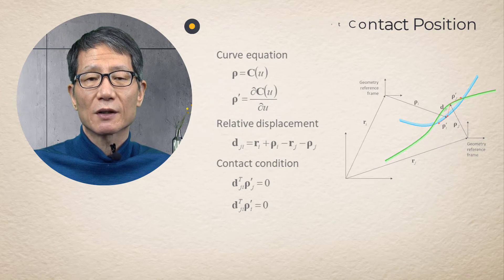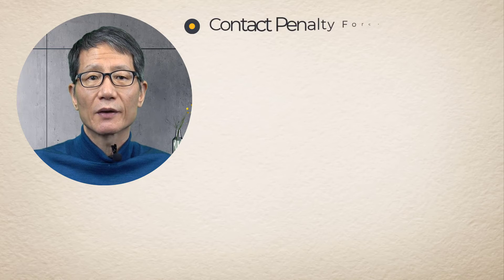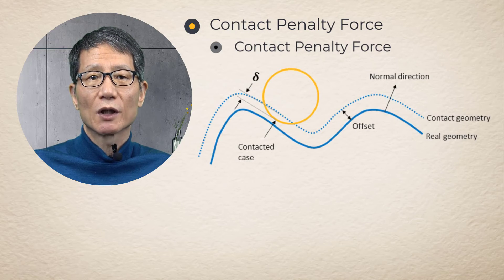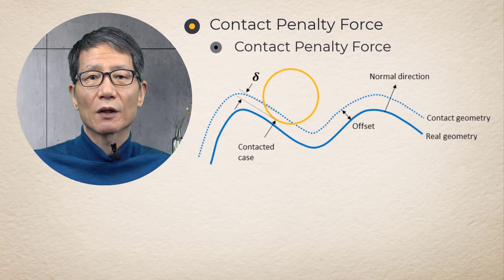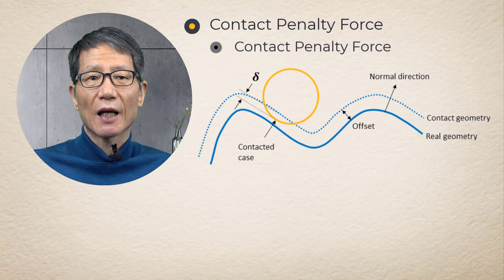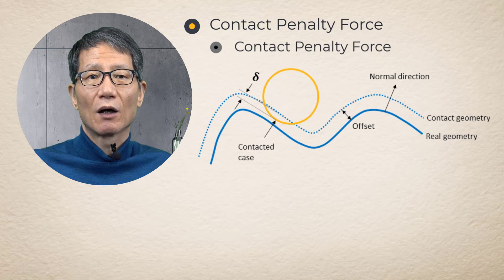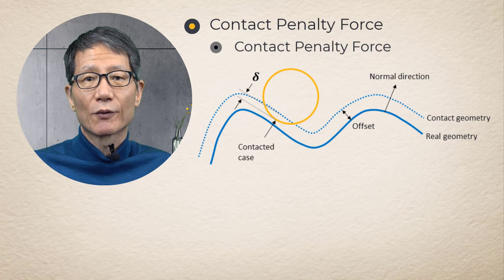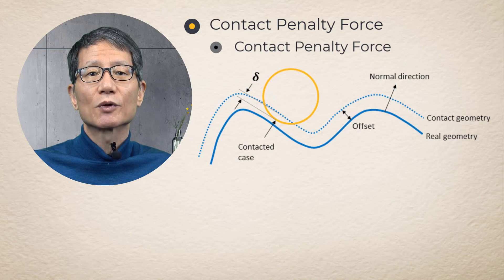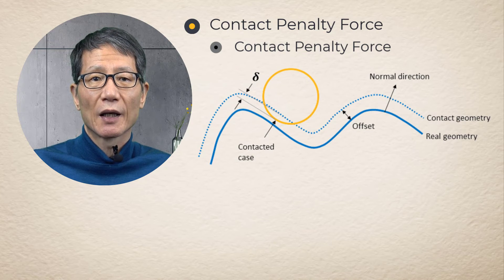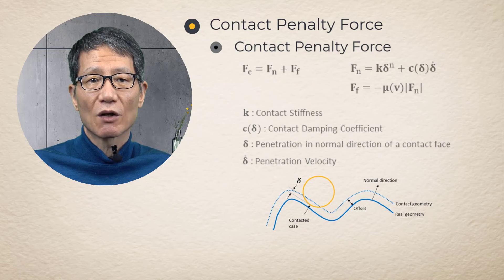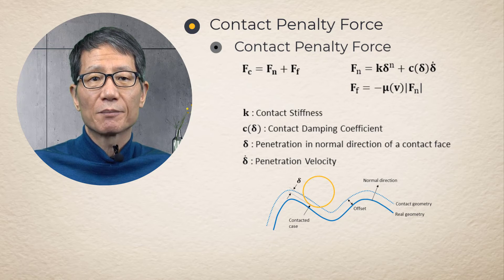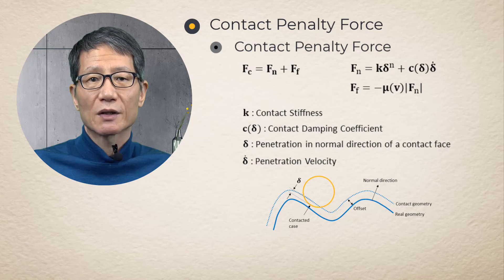Contact Penalty Force. A penalty method is adopted by ANSYS Motion to account for the contact mechanics. When a contact is detected, two forces are generated along the normal and tangential directions. The normal force consists of the penalty force proportional to the penetration depth and the damping force representing energy loss during a contact. The penalty force is calculated by contact stiffness and penetration depth.